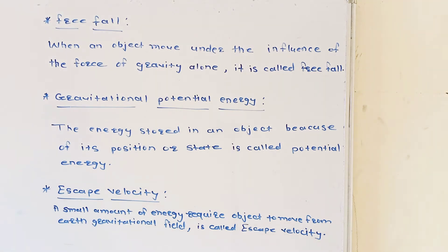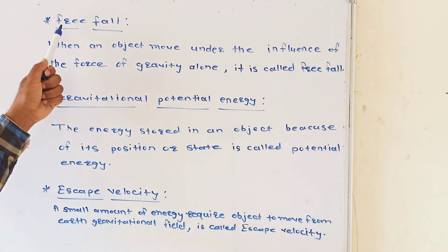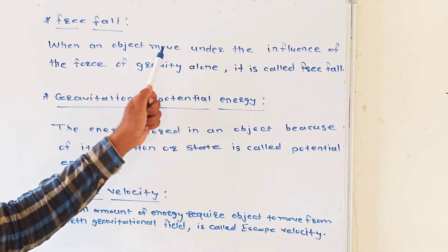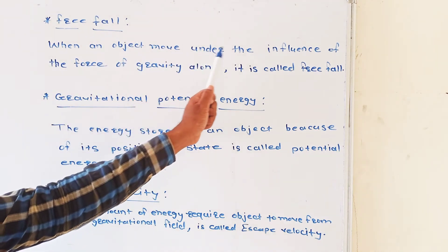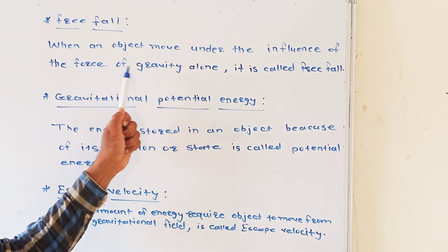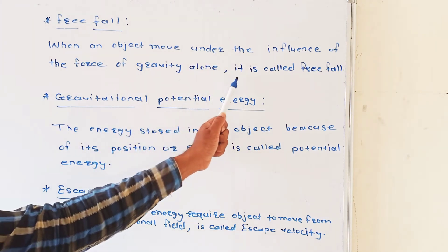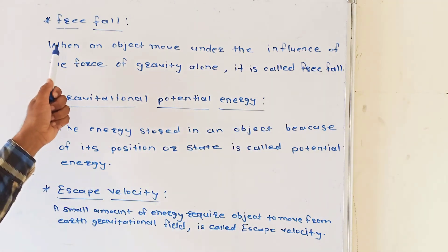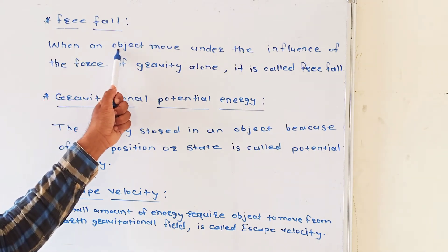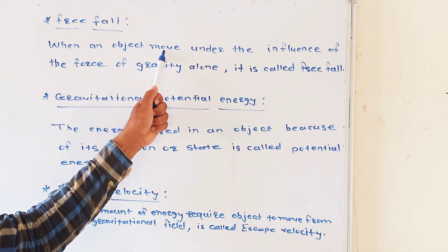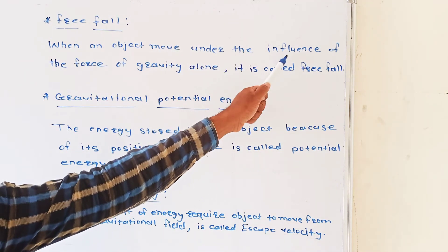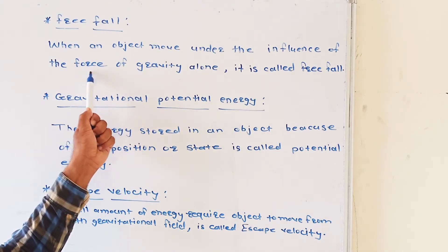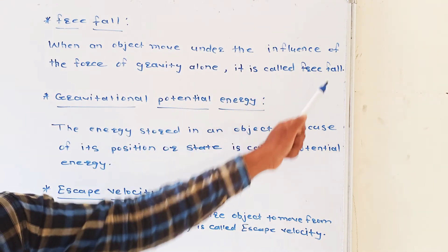Let us see the first point: freefall. Its definition is — when an object moves under the influence of the force of gravity alone, it is called freefall. When one object moves under the influence of gravitational force, it will be freefall.